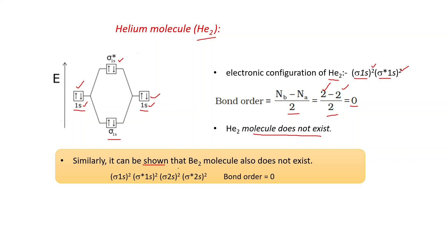Similarly, it can be shown that Be₂ also does not exist. The electronic configuration of Be₂ is sigma 1s², sigma star 1s², sigma 2s², sigma star 2s². Electrons in bonding molecular orbitals: 2 + 2 = 4; in anti-bonding: 2 + 2 = 4. Bond order = (4 − 4) / 2 = 0, so Be₂ does not exist.